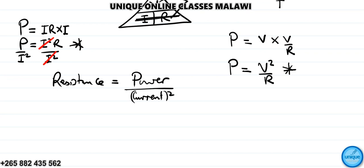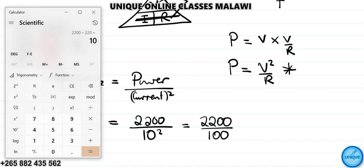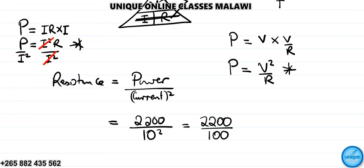Resistance equals power divided by current squared. That is 2,200 watts divided by 10 squared, which is 100. So 2,200 divided by 100 — the answer is 22 ohms.